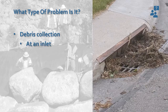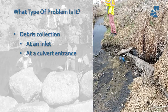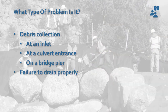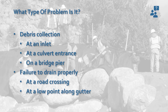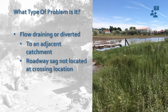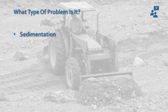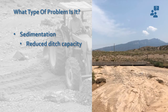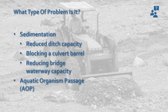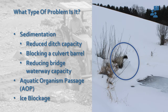You may also see debris collection — debris or trash clogging inlets, debris blocking a culvert entrance, or debris on a bridge pier. Another type of problem is failure to drain properly, such as when a structure at a road crossing doesn't drain right, or an inlet at a low point along the gutter is clogged. Flow may also drain or be diverted to an adjacent catchment, over the sag of the roadway, or outside the right-of-way onto a landowner's property. Sedimentation can reduce ditch flow capacity and block culvert barrels and reduce bridge waterway capacity. Maintenance issues can also cause negative impacts on aquatic organism passage (AOP), and another region- and season-dependent type of problem is ice blockage.